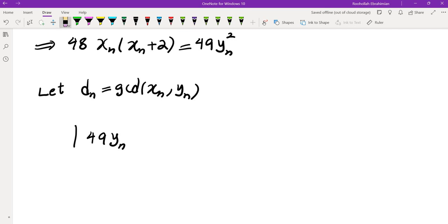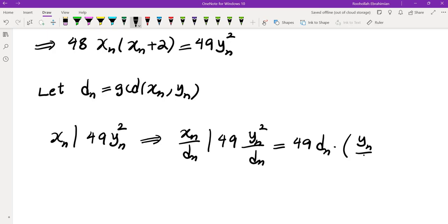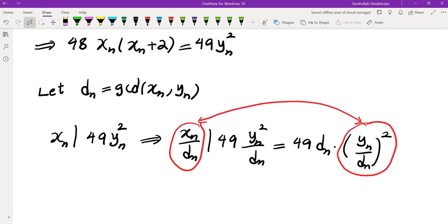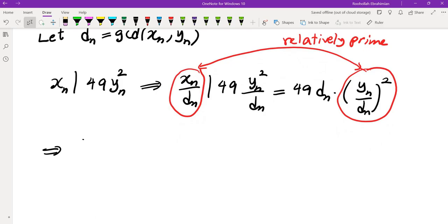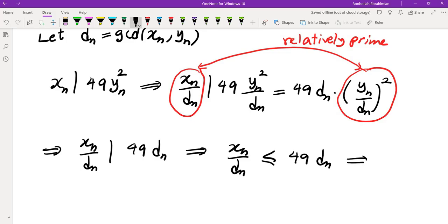Let me do xn over dn. Since xn over dn is relatively prime to yn over dn, let's divide both sides by dn. We get 49 yn squared over dn, which we write as 49 dn times yn over dn squared. Since these two quantities are relatively prime, we can deduce that xn over dn divides 49 dn, which means xn over dn is less than or equal to 49 dn. So xn is less than or equal to 49 dn squared.